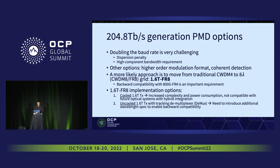There are two options for implementation of 1.6T FR8. The first one is based on a cooled transceiver, which increases the complexity and power consumption and might not be compatible with future integrated systems. A more preferred approach would be an uncooled 1.6T using a tracking demultiplexer, where we tune the receiver to the incoming TX channels. For this option we need to introduce additional wavelength specs to ensure backward compatibility, which I'll discuss later.